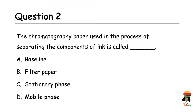Question two: complete the following sentence. The chromatography paper used in the process of separating the components of ink is called — A: baseline. B: filter paper. C: stationary phase. D: mobile phase. The answer is stationary phase.